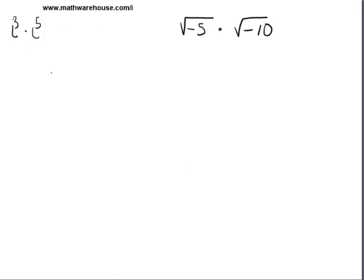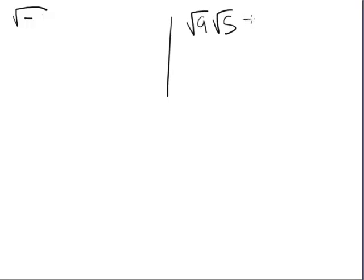Before we jump into these problems, I just want to go over a little bit of the background knowledge that you need. You may remember from radicals that the square root of nine times the square root of five can be rewritten as the square root of forty-five. When you multiply radicals, the product of two radicals is equal to the radical of their products. Just a reminder that this is true when these numbers — nine and five — are positive.